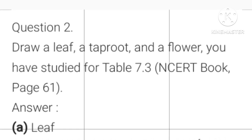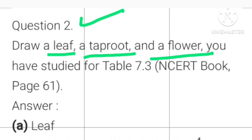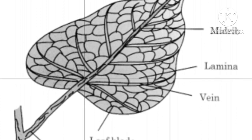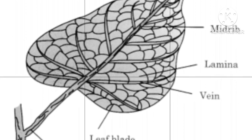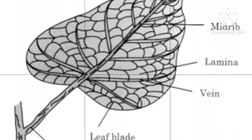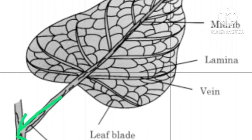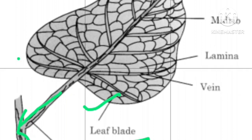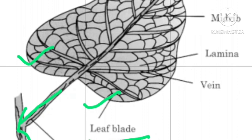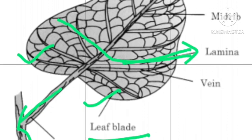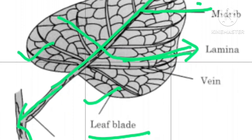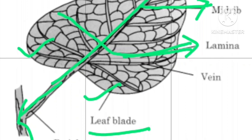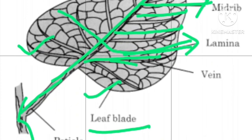Question number two: Draw a leaf, a taproot and a flower. First is leaf. Along with the diagram, you have to write the names of its different parts. First part is petiole — the part of a leaf by which it is attached to the stem. The broad flat parts are called the blade. The middle broad part is called lamina. The middle thick line is called mid rib, and the thin lines in the leaf are called veins.